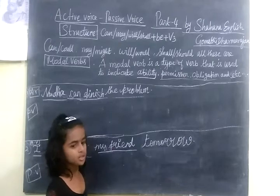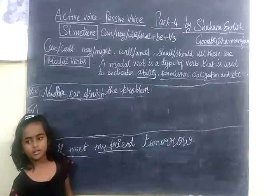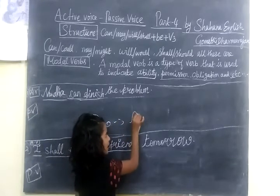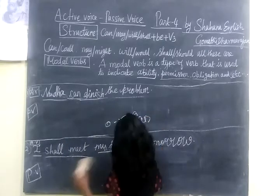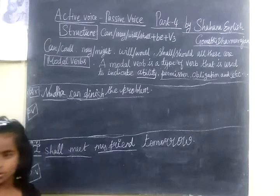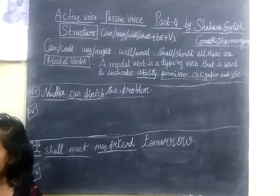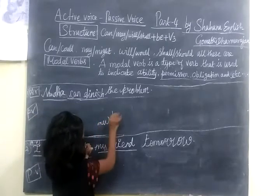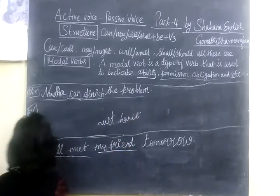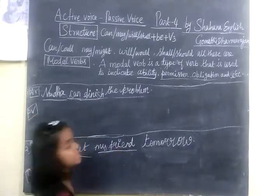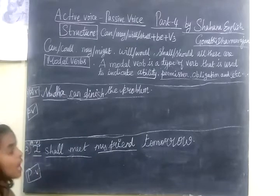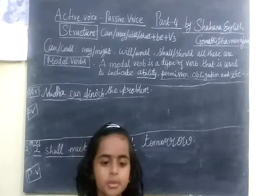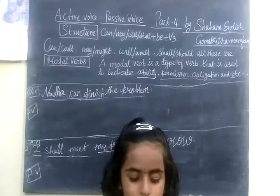For obligation, we use 'must' and 'have to'. For example: I must prepare for my lunch today. I have to prepare for my lunch. I have to prepare for my exams.